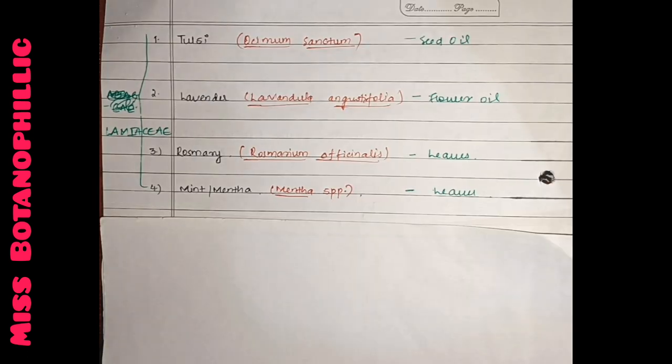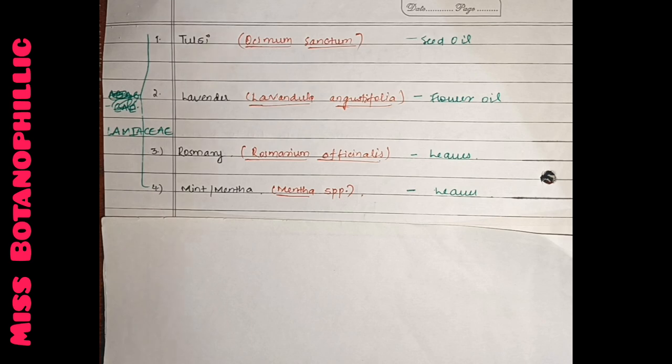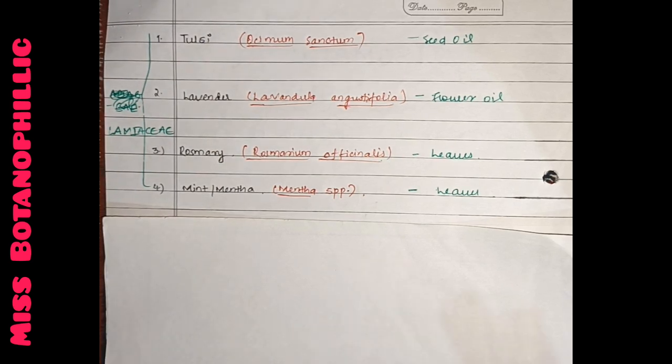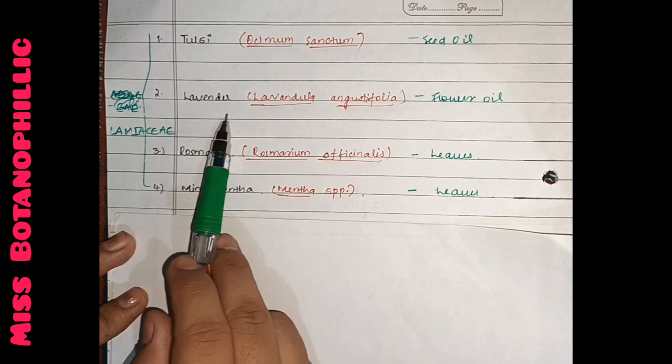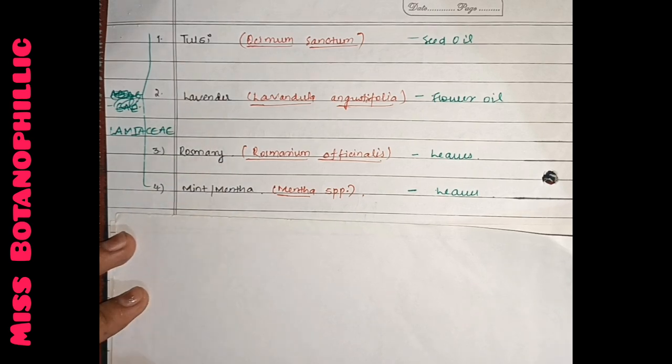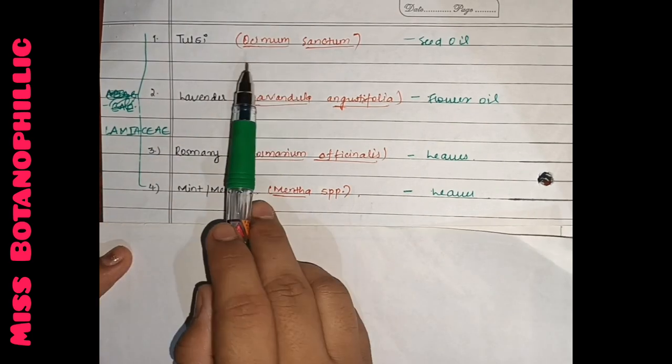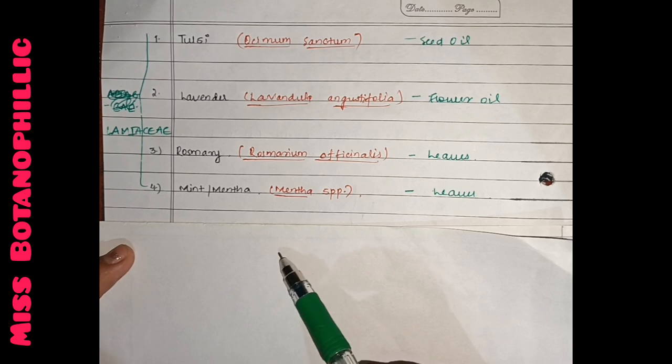Lamiaceae family, which is Tulsi family, I have included four members: Tulsi, Lavender, Rosemary, Mentha or Mint. Tulsi's name is Ocimum sanctum. And from this seed, we have oil extracts. This is the aroma or fragrance.